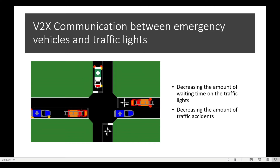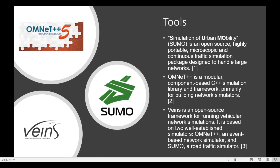So let's start — why is V2X communication between emergency vehicles and traffic lights so important? Because it can decrease the amount of waiting time at traffic lights and decrease the amount of traffic accidents. Actually, emergency vehicles can violate traffic lights, however it will increase the chance of accidents by four times. That's why it's very important to control traffic lights with respect to emergency vehicles.